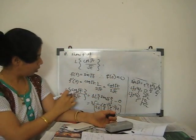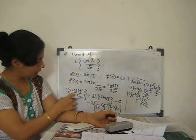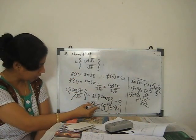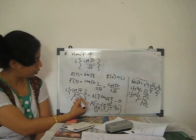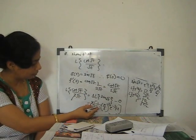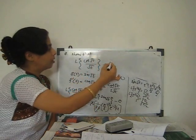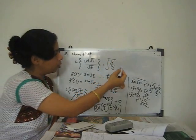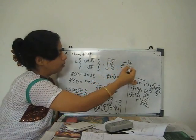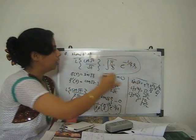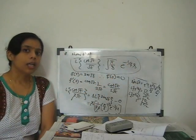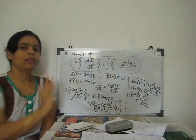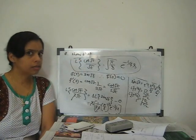Since 2 is a constant, the factor of 2 cancels with the 2 in the denominator, and s cancels with s. Therefore, the Laplace transform of cos√t / √t = √(π/s)·e^(−1/(4s)), which is what we needed to derive using the derivative property.